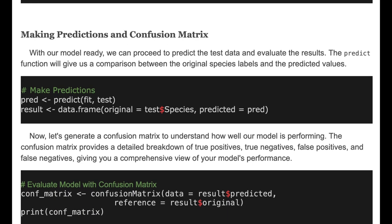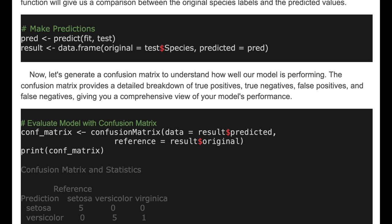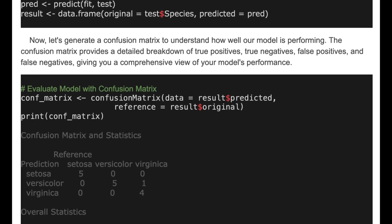Now we'll generate a confusion matrix to understand how well our model is performing. The confusion matrix provides a detailed breakdown of true positives, true negatives, false positives, and false negatives, giving you a comprehensive view of your model's performance.